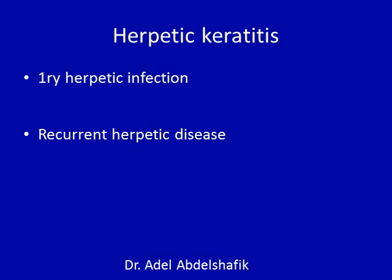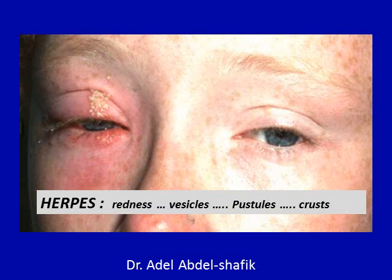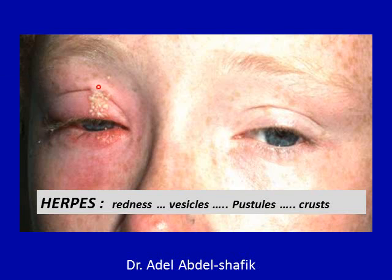Another example is herpes. Herpes simplex virus can produce a dendritic ulcer or disciform keratitis. Herpes means a lesion that starts on the skin with an area of redness, then vesicles form, which become secondarily infected forming pustules, then the pustules rupture leaving crusts. So the skin lesion sequence — redness, vesicle, pustule, crust — is called herpes. In this example you can see the area is red, there are pustules, and maybe some crusts.